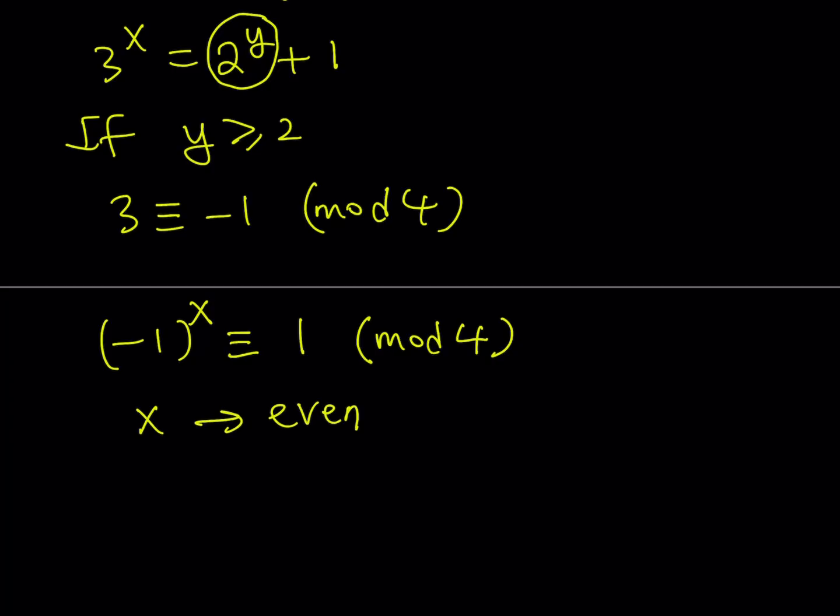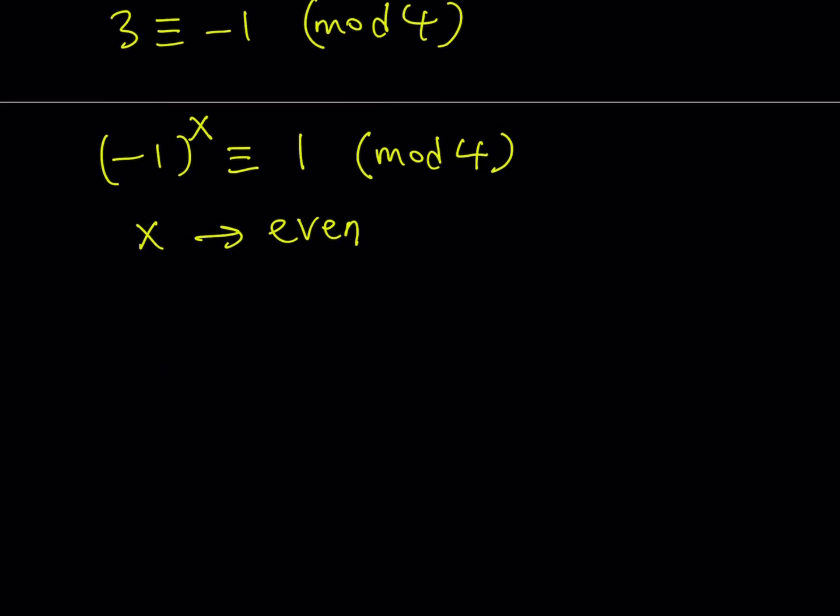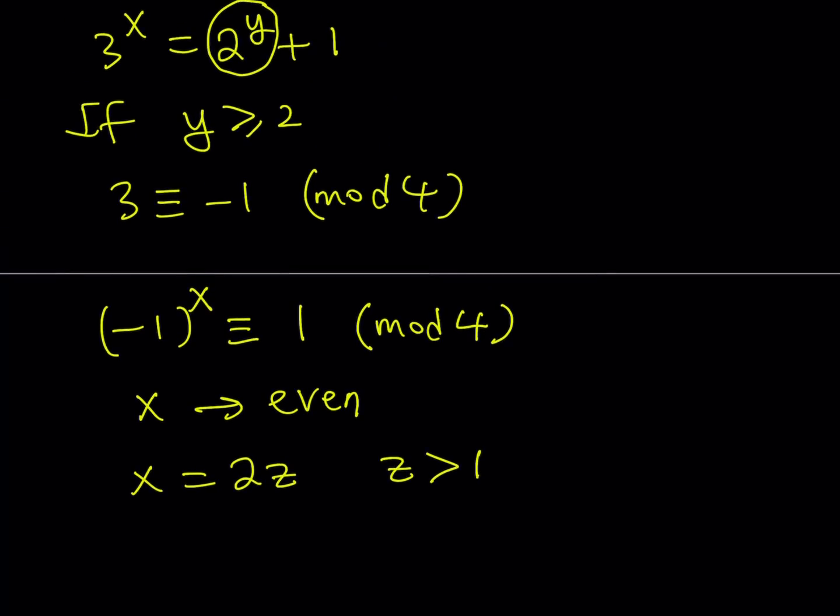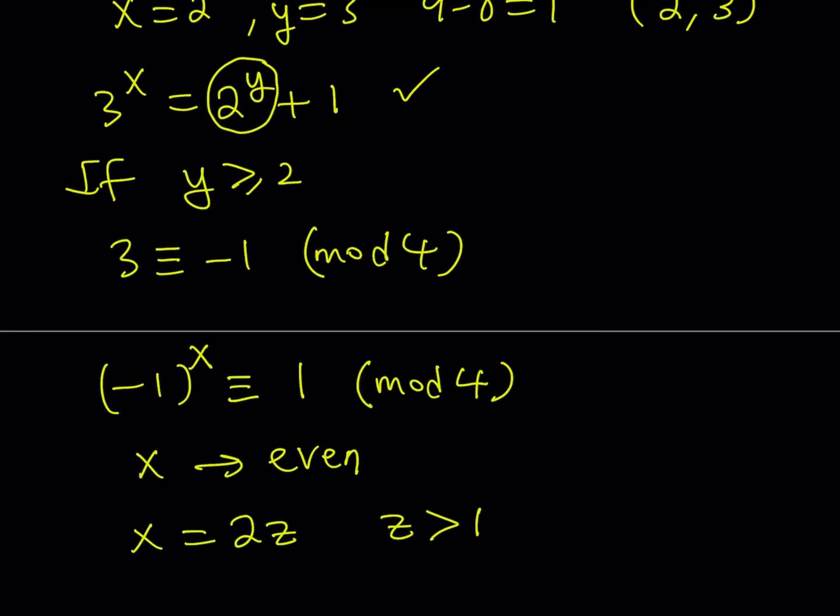Since x is even, I can write it as x equals 2z, where z is an integer greater than 1, because we already have the cases for less than or equal to 1. Now since x can be written as 2z, we can just substitute that into our equation here and see what happens from there.